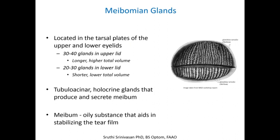Meibomian glands are located in the tarsal plates of the upper and lower eyelids. There are about 30 to 40 glands in the upper lid, as you can see in the picture, and about 20 to 30 glands in the lower lid. The glands in the upper lid are longer, and the volume of meibum they produce is more than the glands in the lower lid, which are shorter and produce a lower volume.